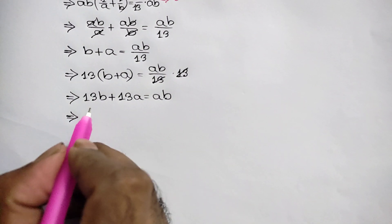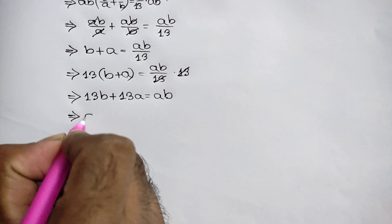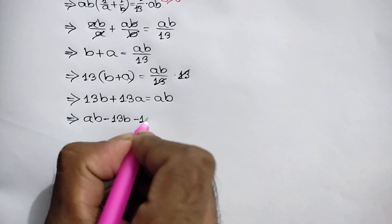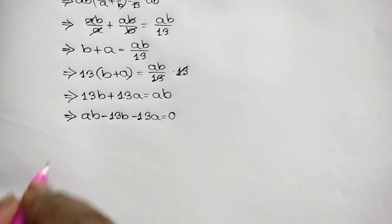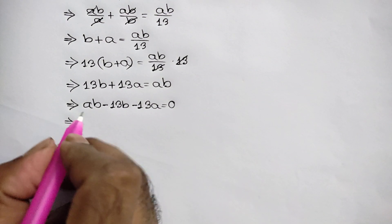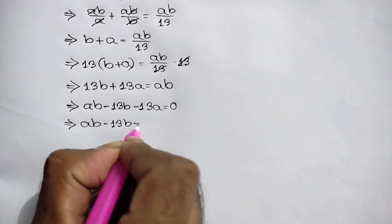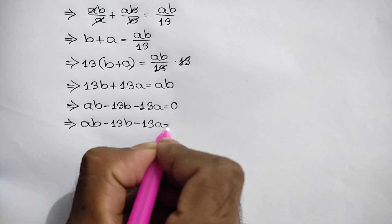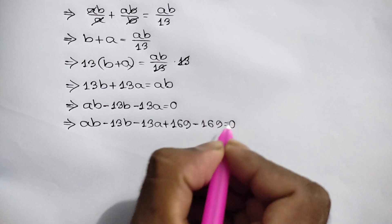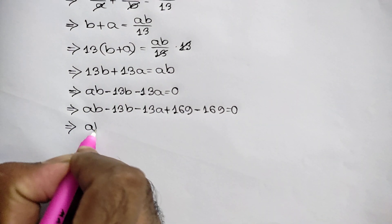Now taking 13b and 13a to the right side, we get ab minus 13b minus 13a is equal to 0. Adding and subtracting 169, we can write ab minus 13b minus 13a plus 169 minus 169 equals 0, so the right side becomes 169.